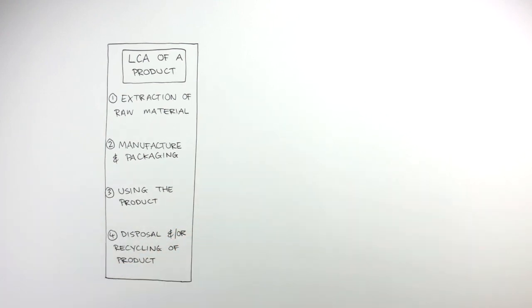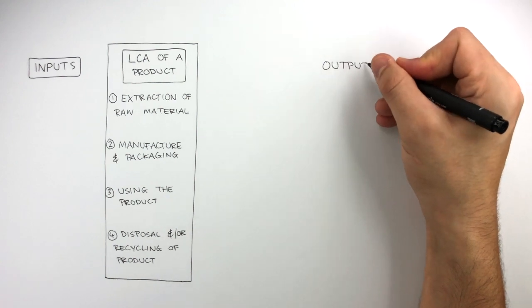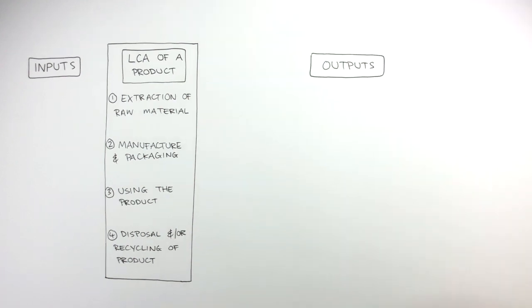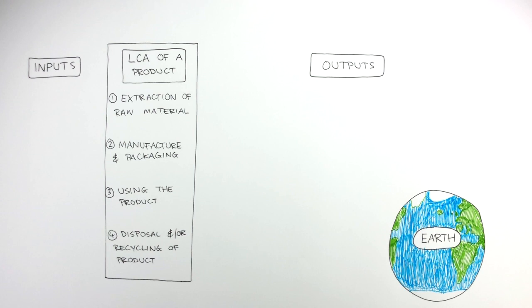We're now going to consider the inputs and outputs of an LCA and we're going to use a diagram of earth to understand this.